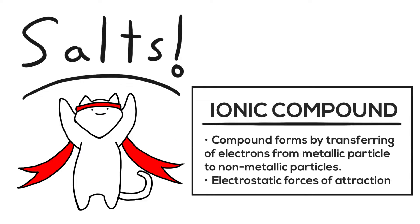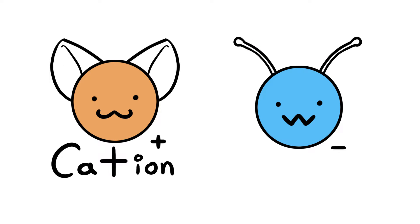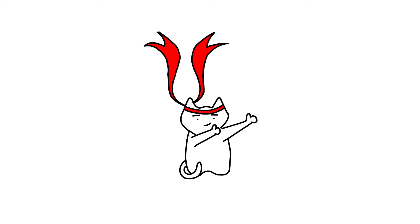Salts are ionic compounds made out of metal and non-metal ions. Metals will always form positive ions, known as cations, and non-metals will always form negative ions, known as anions. Here is an easy way to remember which is which: a cation has a T in the word that looks just like a giant plus sign — use this to remember its positive charge.